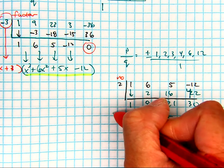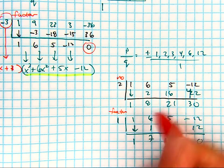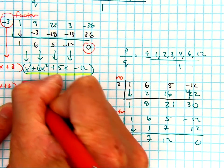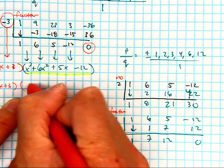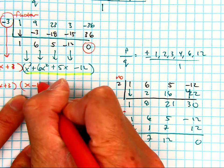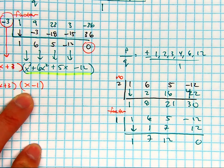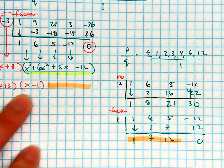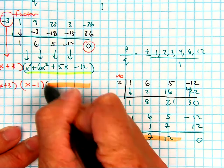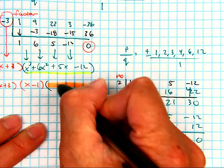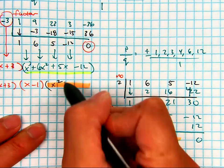So this means this one is a factor. Let's go back up here. We have x plus 3. x what? x minus 1. And then I still have these three. What am I going to write here? x squared, 7x plus 12.